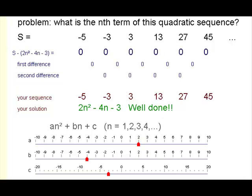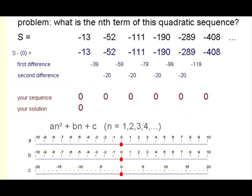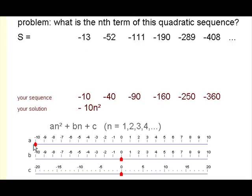We could investigate sequences which behave slightly differently. Here we have a situation where the second difference is negative. Now half of that second difference, remember it's half each time for the second difference, half the second difference is minus 10, negative 10.